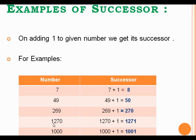In this example, the given number is 1270. So, for finding out the successor of 1270, we just add 1 to 1270, and we will get 1271. 1271 is the successor of 1270.